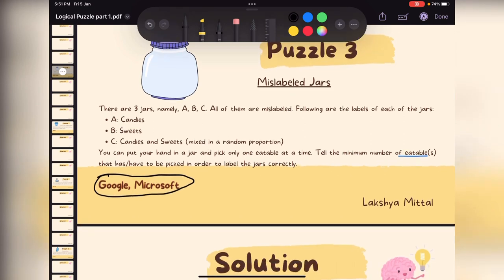So basically what has been given here? I will draw it in simple language. We have 3 jars, right? 3 jars that are mislabeled. That's why it has been given the name mislabeled jars.